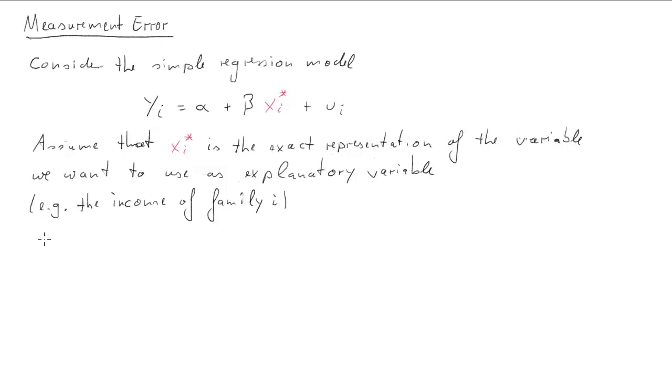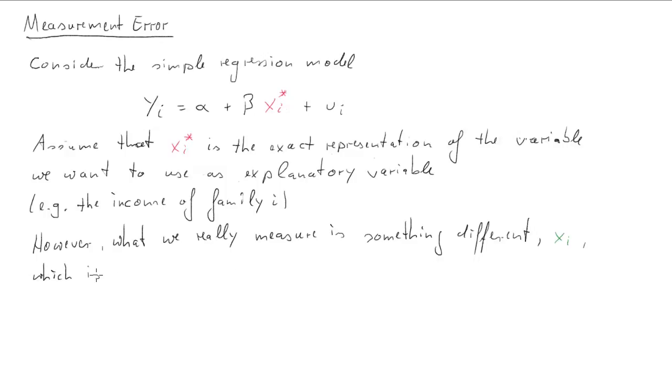So far so straightforward but now we shall also recognize that possibly what we actually measure when we are measuring family income is actually something different and we call that xi. So that xi is now the actual response we get from the ith family when we ask them for their income. But this response xi is most likely going to be somewhat different to the actual true underlying family income xi asterisk.